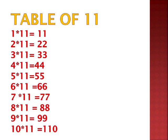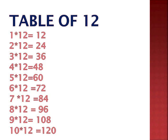Again from the beginning: 1 eleven is 11, 2 elevens are 22, 3 elevens are 33, 4 elevens are 44, 5 elevens are 55, 6 elevens are 66, 7 elevens are 77, 8 elevens are 88, 9 elevens are 99, 10 elevens are 110. Table of 11 is very easy — whichever number is multiplied by 11, just repeat that digit, like 2 gives 22, 3 gives 33.